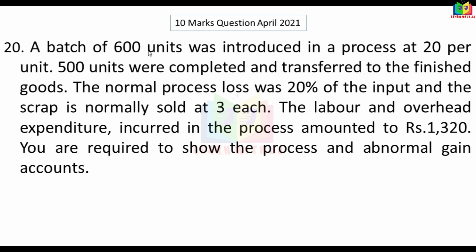A batch of 600 units was introduced in a process at Rs.20 per unit. 500 units were completed and transferred to finished goods. The normal process loss was 20% of the input, and the scrap value is normally sold at Rs.3 each. The labour and overhead expenditure incurred in the process amounted to Rs.1,320. You are required to show the process account and abnormal gain account.